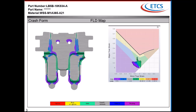This is the result of the crash form. The part is mostly good. It's important to understand what the colors mean: red indicates split, yellow indicates risk of split, green is good/safe, blue indicates compression, and purple indicates thickening. As you can see, when we ran it the part was almost okay across all areas.